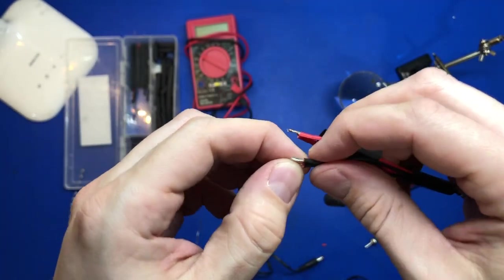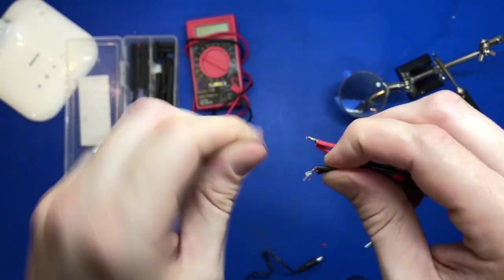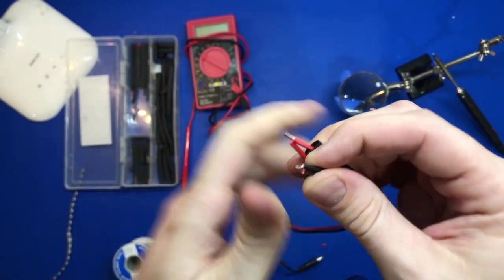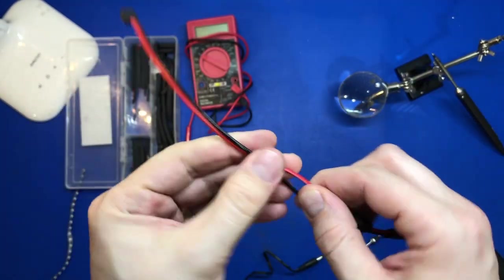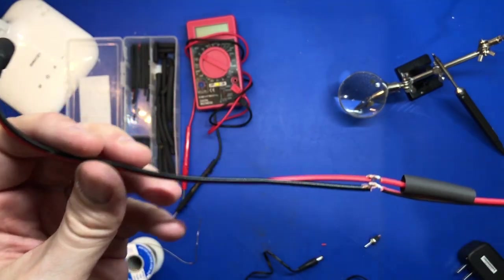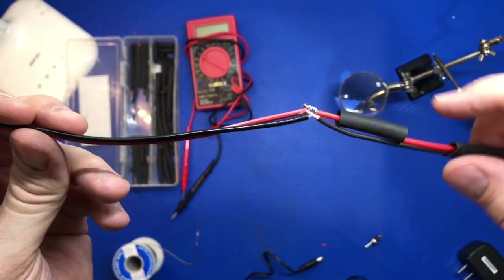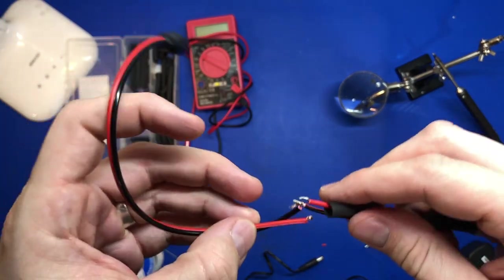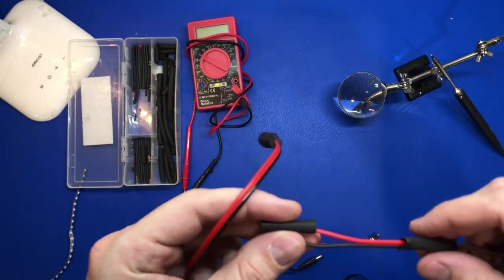And then solder those pieces up, which I'll show you real quick. But you know, you kind of make it neat. If you twist it up real good you can kind of hold it like this and then solder them. And then once you solder it, slide this over with the heat shrink.